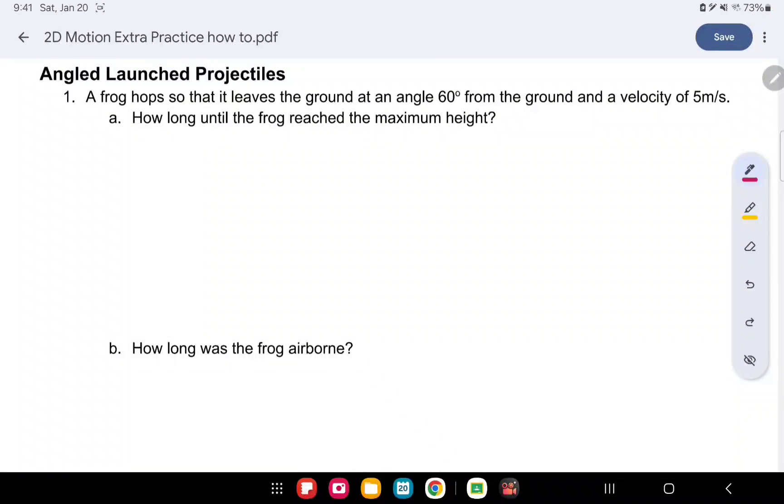Starting with launched projectiles at an angle, so we're launching things at an angle now, or the frog is hopping at an angle. So this cute little frog, let's give him some legs here and some eyes, leaps at an angle 60 degrees from the ground with a velocity of 5 meters per second.